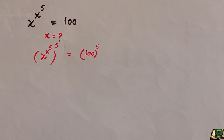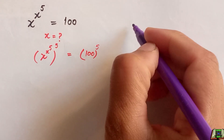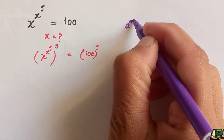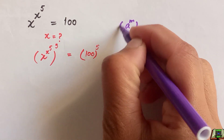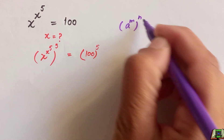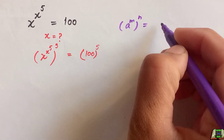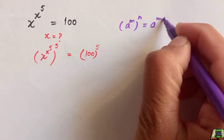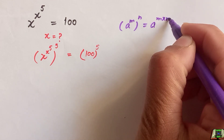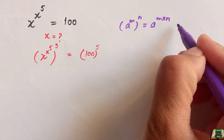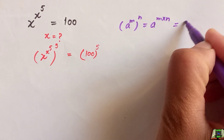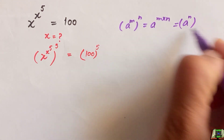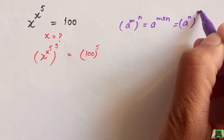The power of a power rule says: a raised to power m, raised to power n, is equal to a raised to power m times n — the powers are multiplied. This is also equal to a raised to power n, raised to power m.